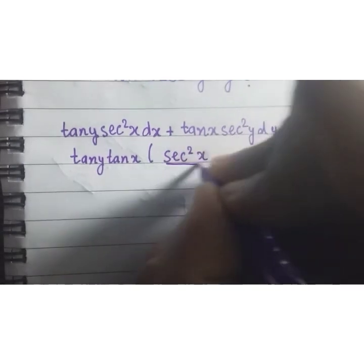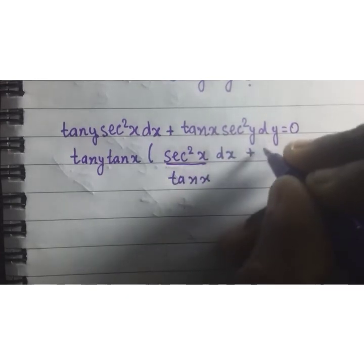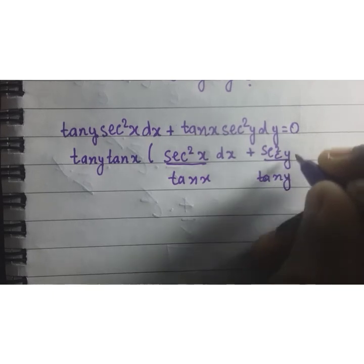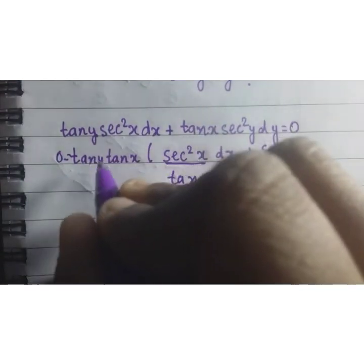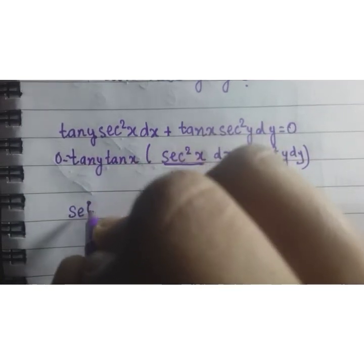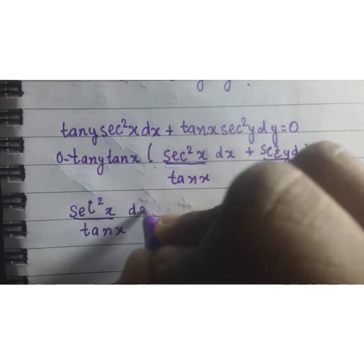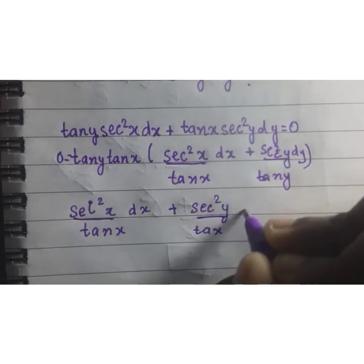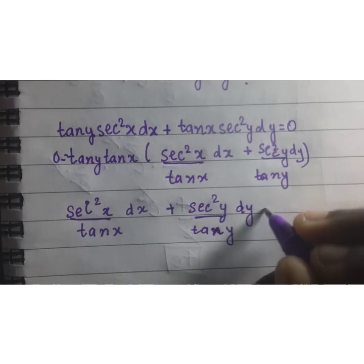Sec²(x) upon tan(x) dx plus sec²(y) upon tan(y) dy is equal to 0. Now this term can be taken here in the denominator and this will be 0.